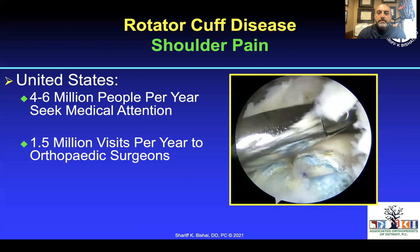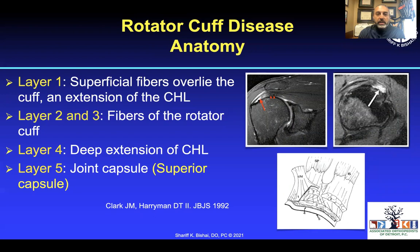We need to understand the anatomy, as we do in any orthopedic-type injury, with the different layers of the rotator cuff. Layer 1 consists of superficial fibers attached to the CHL, as well as layers 2 and 3, the fibers of the rotator cuff. Layer 4 is the deep extension of the coracohumeral ligament, and layer 5 is the superior capsule and the joint capsule.